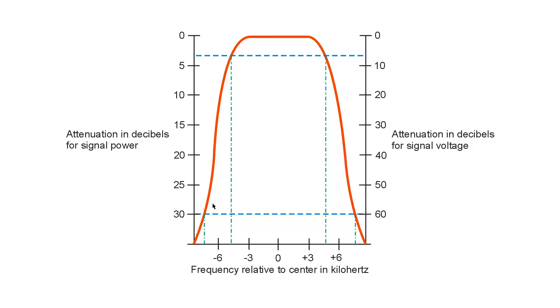When you want to go quantitative, you talk about something called the shape factor. And usually, they refer to the shape factor for the attenuation values at 3 and 30 decibels down for power, which is the equivalent of 6 and 60 decibels down for voltage. Now, we can actually kind of guess at what that shape factor might be here.